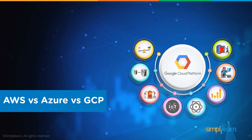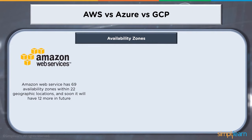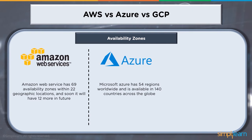Let's do a quick comparison of AWS versus Azure versus GCP. Amazon Web Services has 69 availability zones within 22 geographical locations, with 12 more coming in future. Microsoft's Azure has 54 regions worldwide and is available in 140 countries. Google Cloud Platform is available in 200-plus countries across the globe.